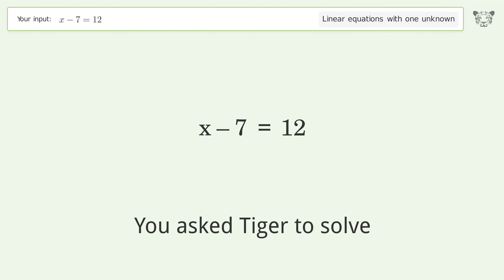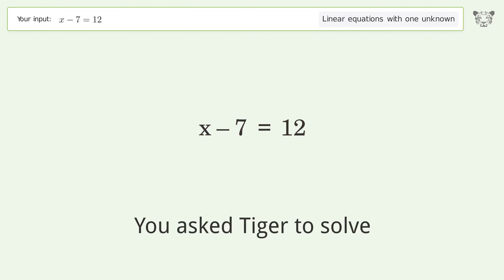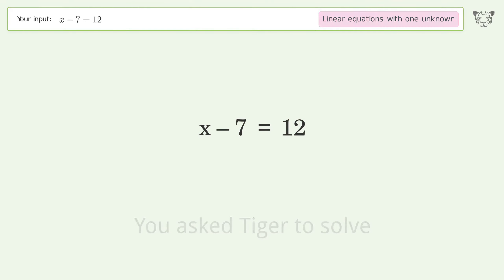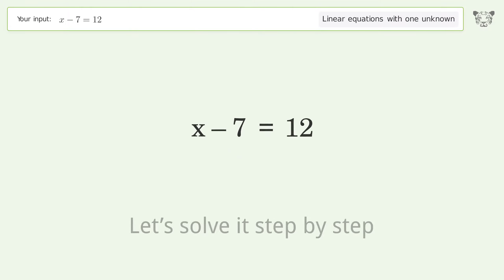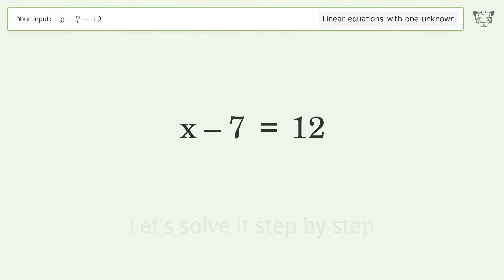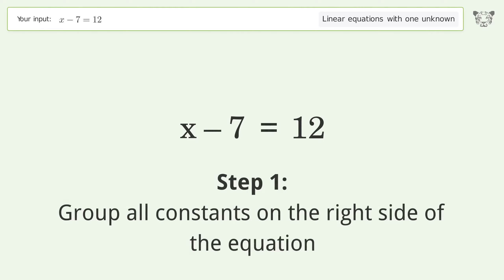Tiger algebra solves this linear equation with one unknown. The final result is x equals 19. Let's solve it step by step, grouping all constants on the right side of the equation.